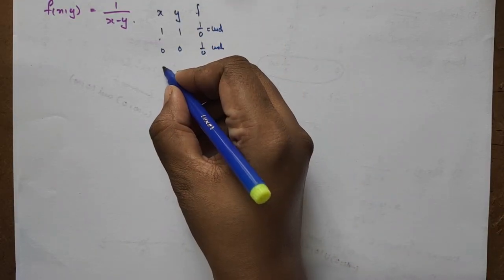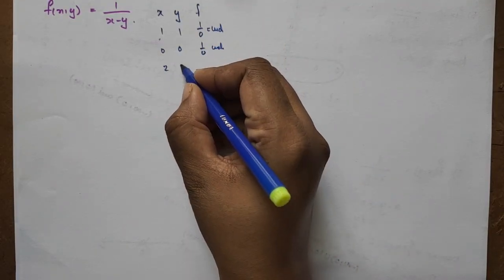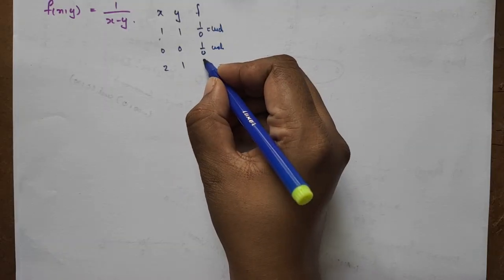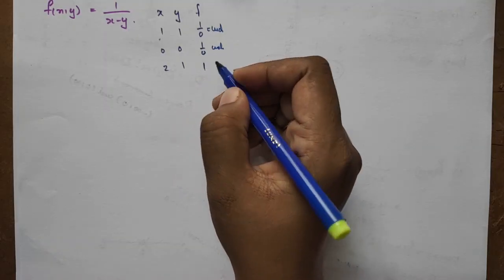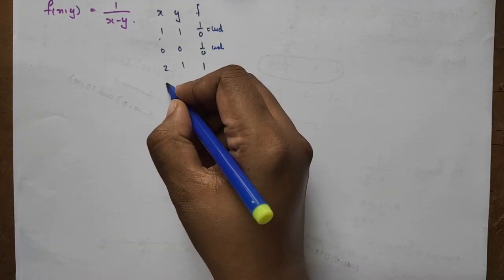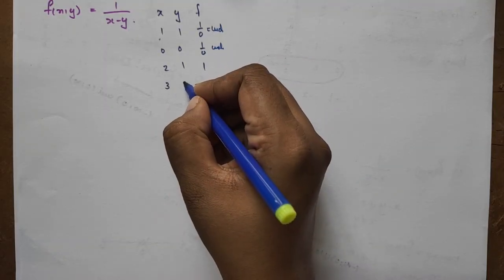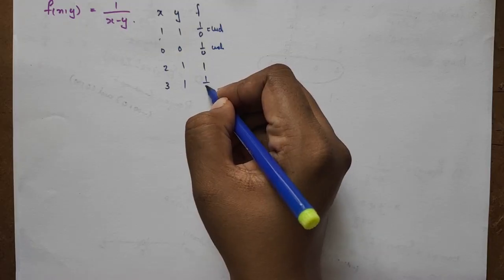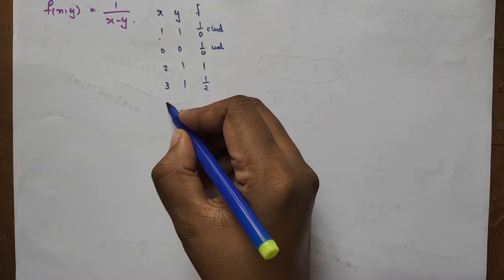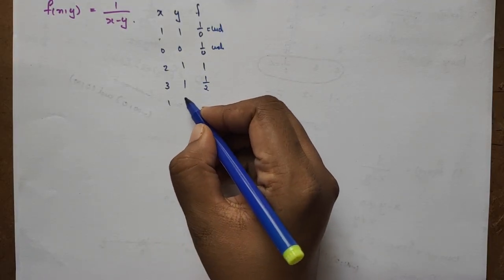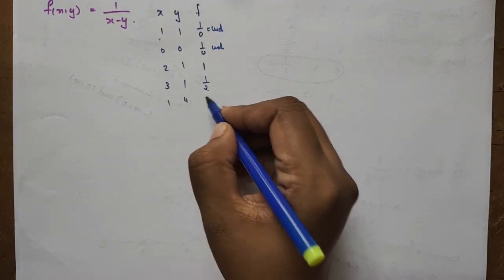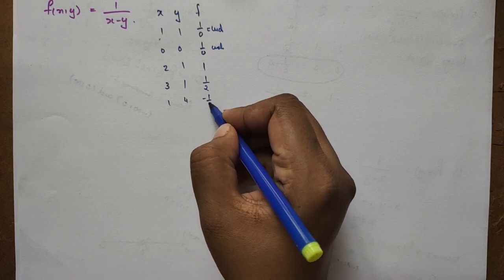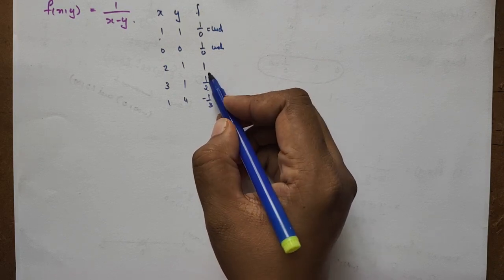For example: f(2,1) = 1/(2−1) = 1; f(3,1) = 1/2; f(1,4) = 1/(1−4) = −1/3. So the output can be positive or negative.